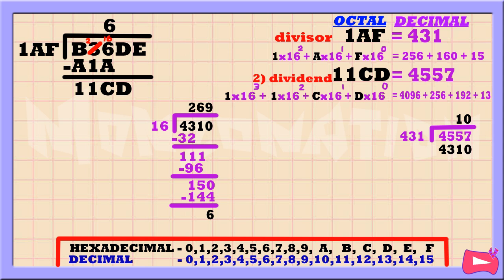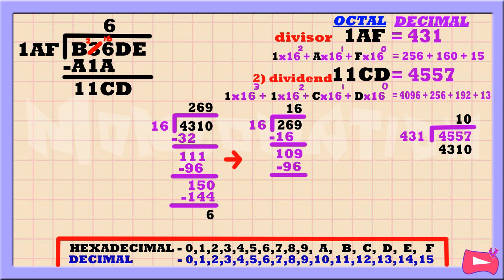And obviously it's not a hex number, so let's convert 269 into a hex number. 26 divided by 16 is 1. Then 1 times 16 is 16. Subtract. 26 minus 16 is 10. Bring down 9. 109 divided by 16 is 6. Then 6 times 16 is 96. Subtract. 109 minus 96 is 13. As you can see, the quotient is 16 — and obviously it's not a hex number. So let's convert 16 into a hex number. 16 divided by 16 is 1. Then 1 times 16 is 16. Subtract. 16 minus 16 is 0. The quotient, which is 1, is a hex number. So now we can stop dividing.